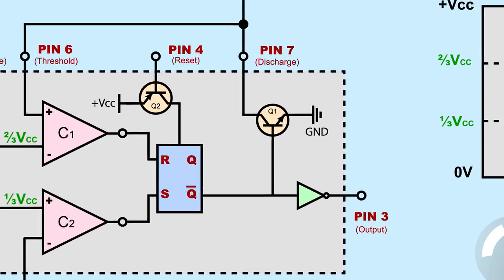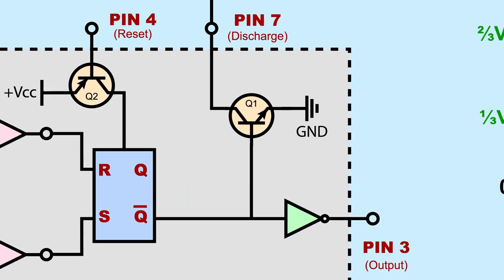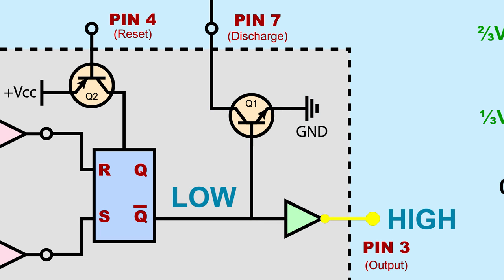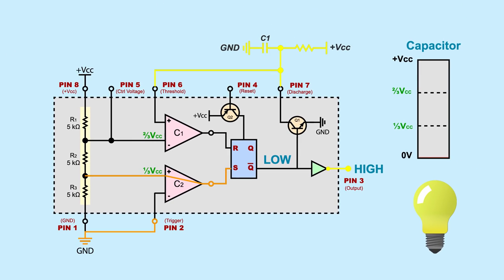If you remember from the previous lesson, pin 7 is internally connected to a transistor that is on when the 555 output is low, and off when the output is high. So when pin 2 is triggered and the 555 goes high, the transistor is off, so the capacitor connects to VCC and begins charging up. Remember, this means that pin 6 and 7 will have the same voltage as the capacitor. With enough charge, pin 6 goes above 2 thirds VCC, resetting the 555.